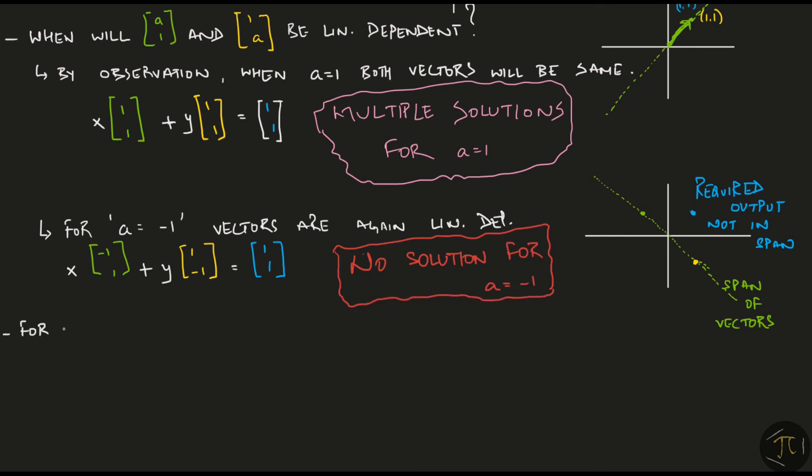For every other value of a, the input vectors are linearly independent. Here is the proof of this. To check for linear dependency of two vectors, we look for the values of c1 and c2 that make this expression equal to the zero vector. Converting to row form, I get two equations in c1 and c2,